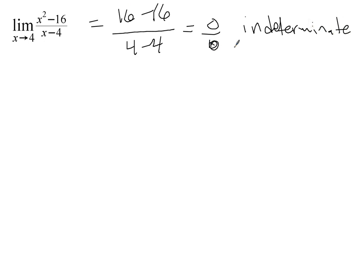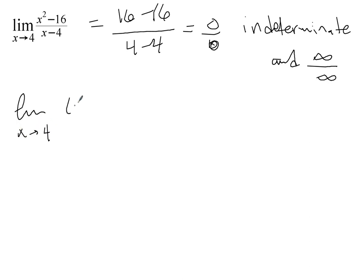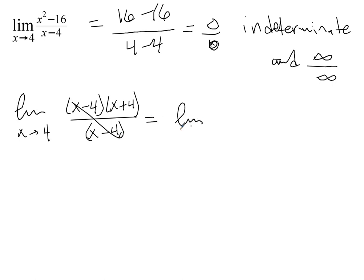For AB, there are two indeterminate forms that you need to worry about: 0 over 0, and infinity over infinity. For BC, I'll have a separate video with some of the other indeterminate forms you'll have to deal with. You have two options on how to solve this problem. The first is to factor the numerator, then cancel any like terms in the numerator and denominator, to get 8.